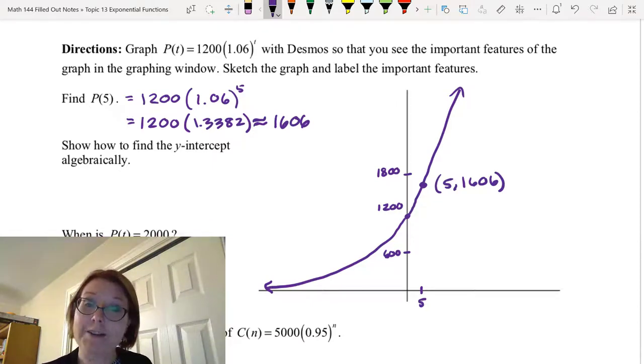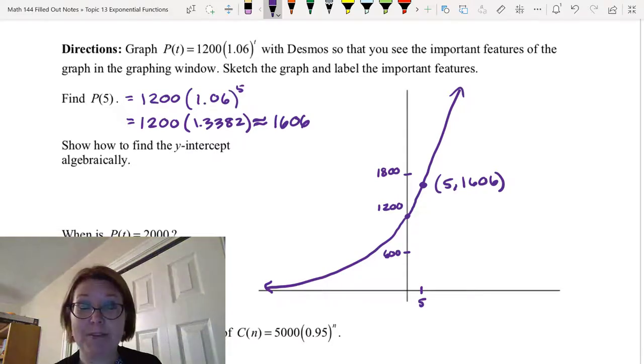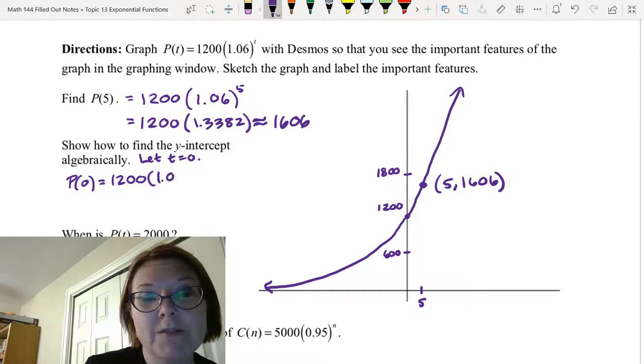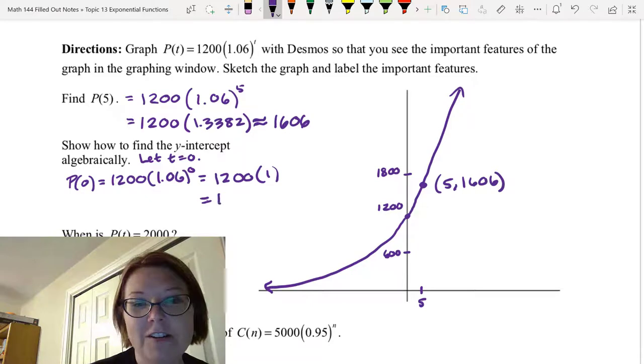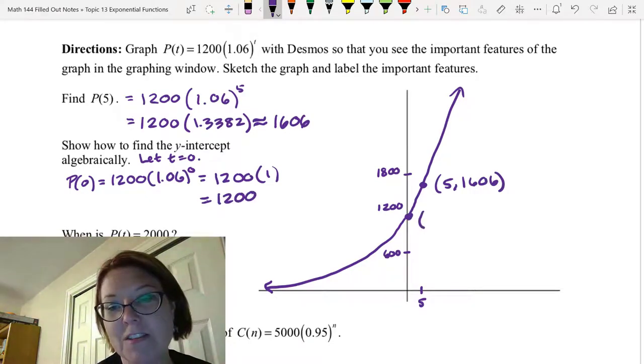Next we want to show how to find the y-intercept algebraically. So if we want the y-intercept, then we want the other variable to be zero. So in this case, we're going to let t = 0. And if we do that, we'll have P(0) = 1200 times 1.06 to the zero. And that would be 1200 times 1. There's our exponent skills at work. Or just 1200. And of course, we knew that our y-intercept was 1200, but this just lets us prove that we can do it algebraically.